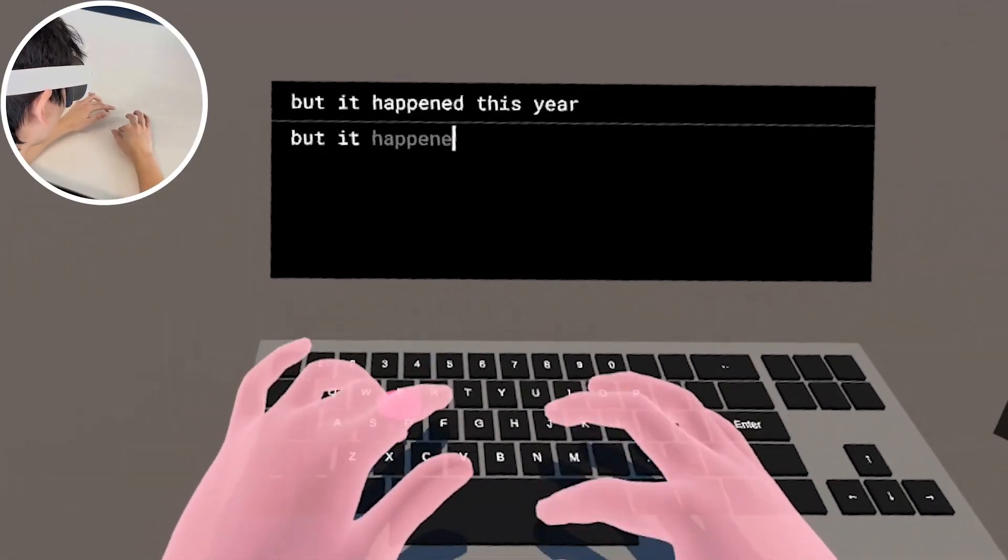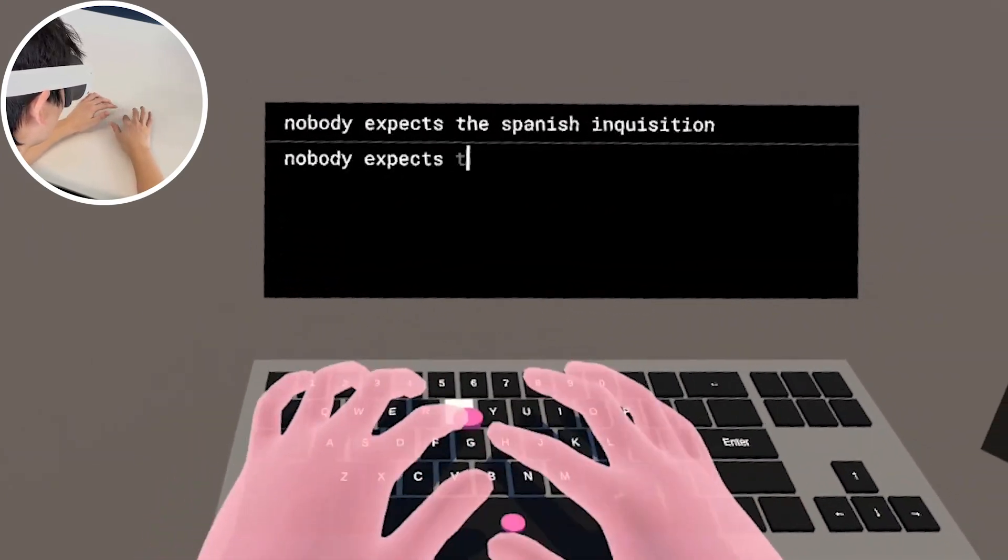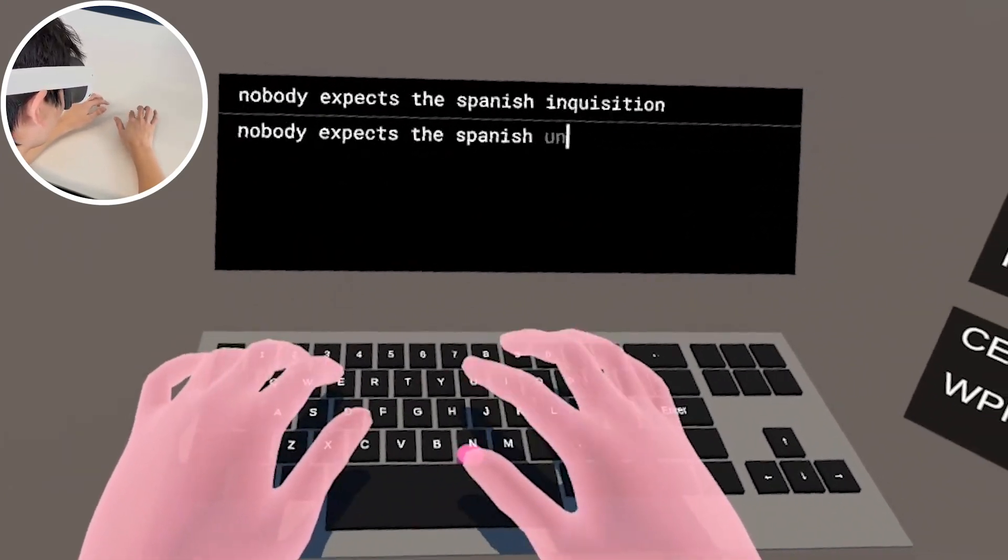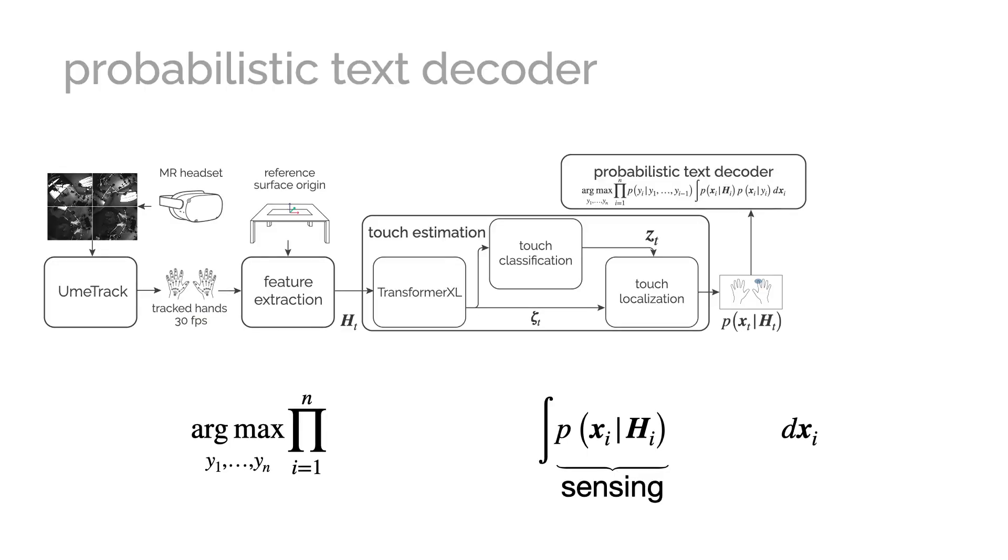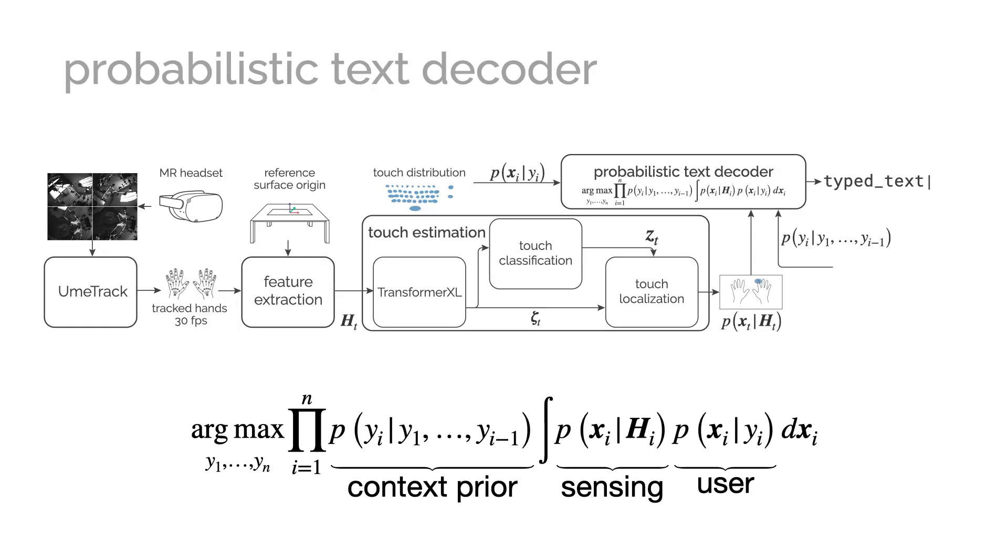We demonstrate our framework on the challenging example of two-handed text entry on a surface keyboard in mixed reality where our probabilistic text decoder fuses the estimated probability distributions for the touch locations with per-key touch likelihoods that capture the distribution of points for intended key hits and a prior based on previously typed text estimated by a language model.